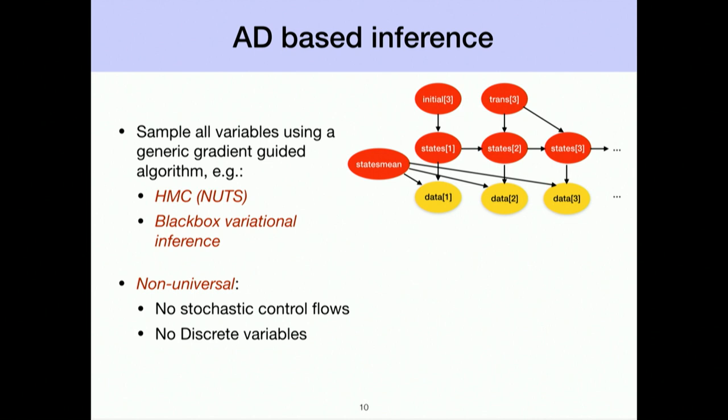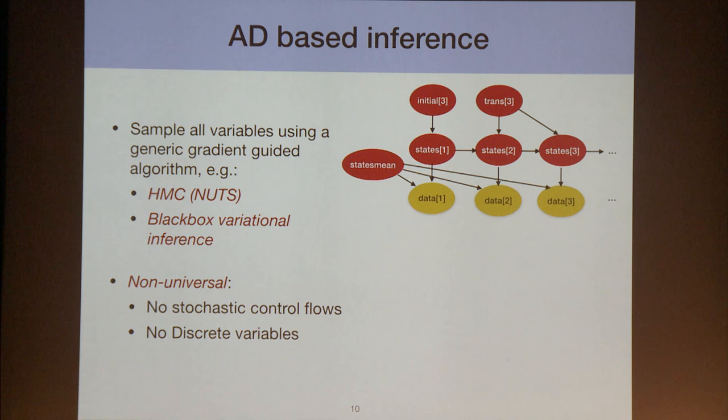The second popular inference framework is based on auto-differentiation. The philosophy is to constrain the set of supported models to improve inference efficiency. These algorithms only support models without stochastic control flows and without discrete variables, because gradient information is required. Two popular examples covered earlier today are Hamiltonian Monte Carlo, the default sampler in Stan, and black-box variational inference, presented by Professor David Blei.